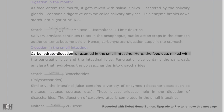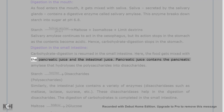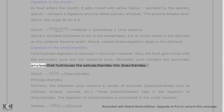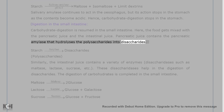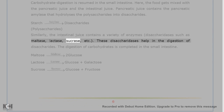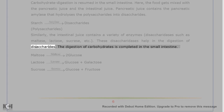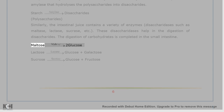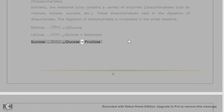Salivary amylase converts starch into maltose, isomaltose, and limit dextrin. Salivary amylase continues to act in the esophagus, but its action stops in the stomach as the contents become acidic. Hence, carbohydrate digestion stops in the stomach. Carbohydrate digestion is resumed in the small intestine, where food gets mixed with the pancreatic juice and the intestinal juice. Pancreatic juice contains pancreatic amylase that hydrolyzes polysaccharides into disaccharides. The intestinal juice contains disaccharidases such as maltase, lactase, sucrase, etc., which further digest the disaccharides. The digestion of carbohydrates is completed in the small intestine, with maltose yielding glucose, lactose yielding glucose and galactose, and sucrose yielding glucose and fructose.